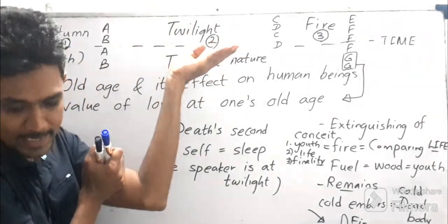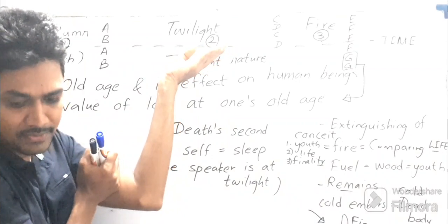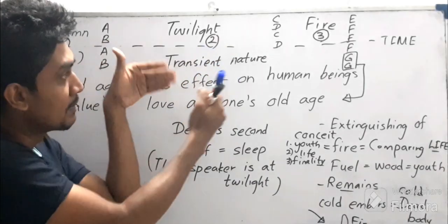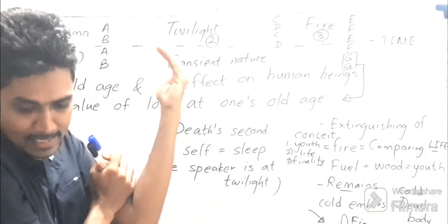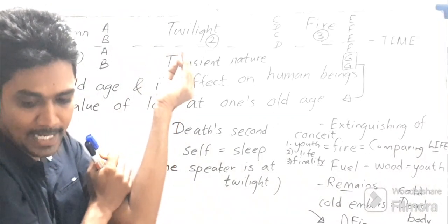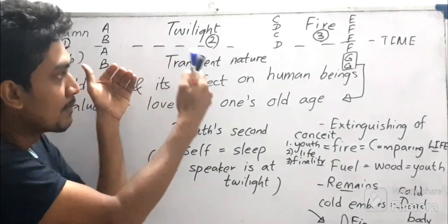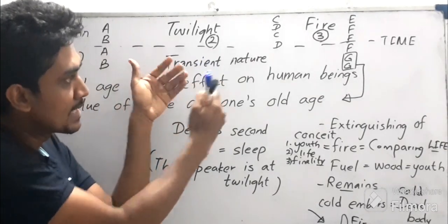'As after sunset fadeth in the west,' which also symbolizes about the day, 'which by and by black night doth take away.' Because I am about to the gloomy stage and the end part of my life, I will be taken away from this human life.